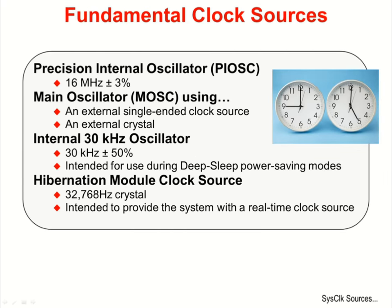There are four fundamental clock sources on Tiva C-Series devices which offer the developer very flexible choices when clocking the device. The Precision Internal Oscillator is a 16MHz oscillator — no external oscillator or crystal support is required. The main oscillator uses an external single-ended clock source or an external crystal; the precision is limited by that external source. The internal 30kHz oscillator has an accuracy of plus or minus 50%, and is intended for use during deep sleep and power-saving modes. Lastly is the Hibernation Module clock source, which requires an external clock crystal.